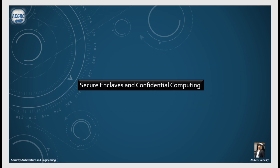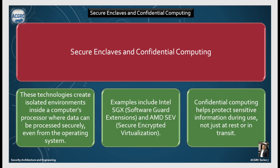Secure enclaves and confidential computing create isolated environments inside a computer's processor where data can be processed securely, even from the operating system. Examples include Intel SGX (Software Guard Extensions) and AMD SEV (Secure Encrypted Virtualization). Confidential computing helps protect sensitive information during use — not just at rest or in transit.